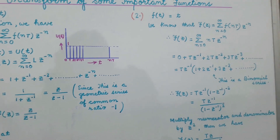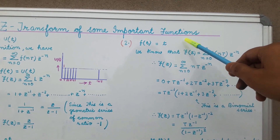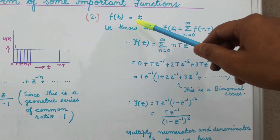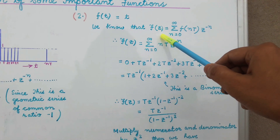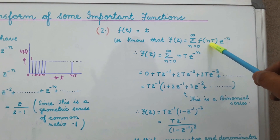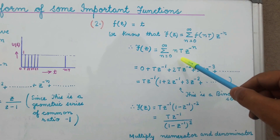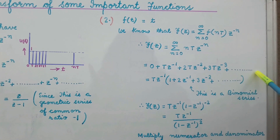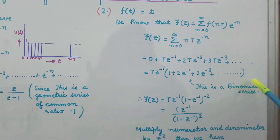Now let us move on to the next function, which is a ramp function. A ramp function is given by f(t) = t, and we have to find the Z transform of this ramp function. From the formula of Z transform, F(Z) is given by summation n=0 to infinity of f(nT) into Z to the power minus n. So we substitute the value of this function and get F(Z) = summation n=0 to infinity of nT into Z to the power minus n. For different values of n, on simplifying, we find that this is a binomial series.